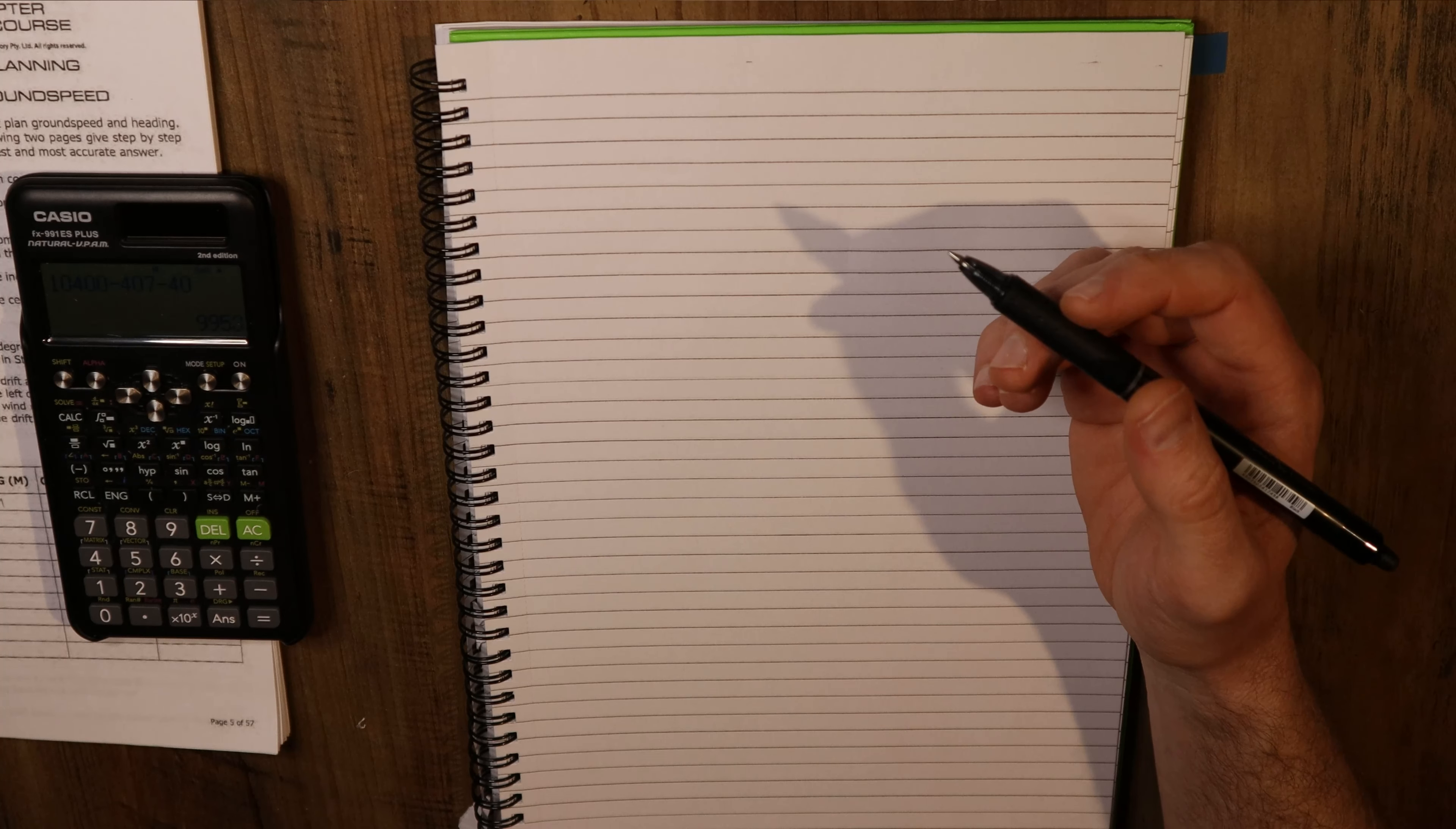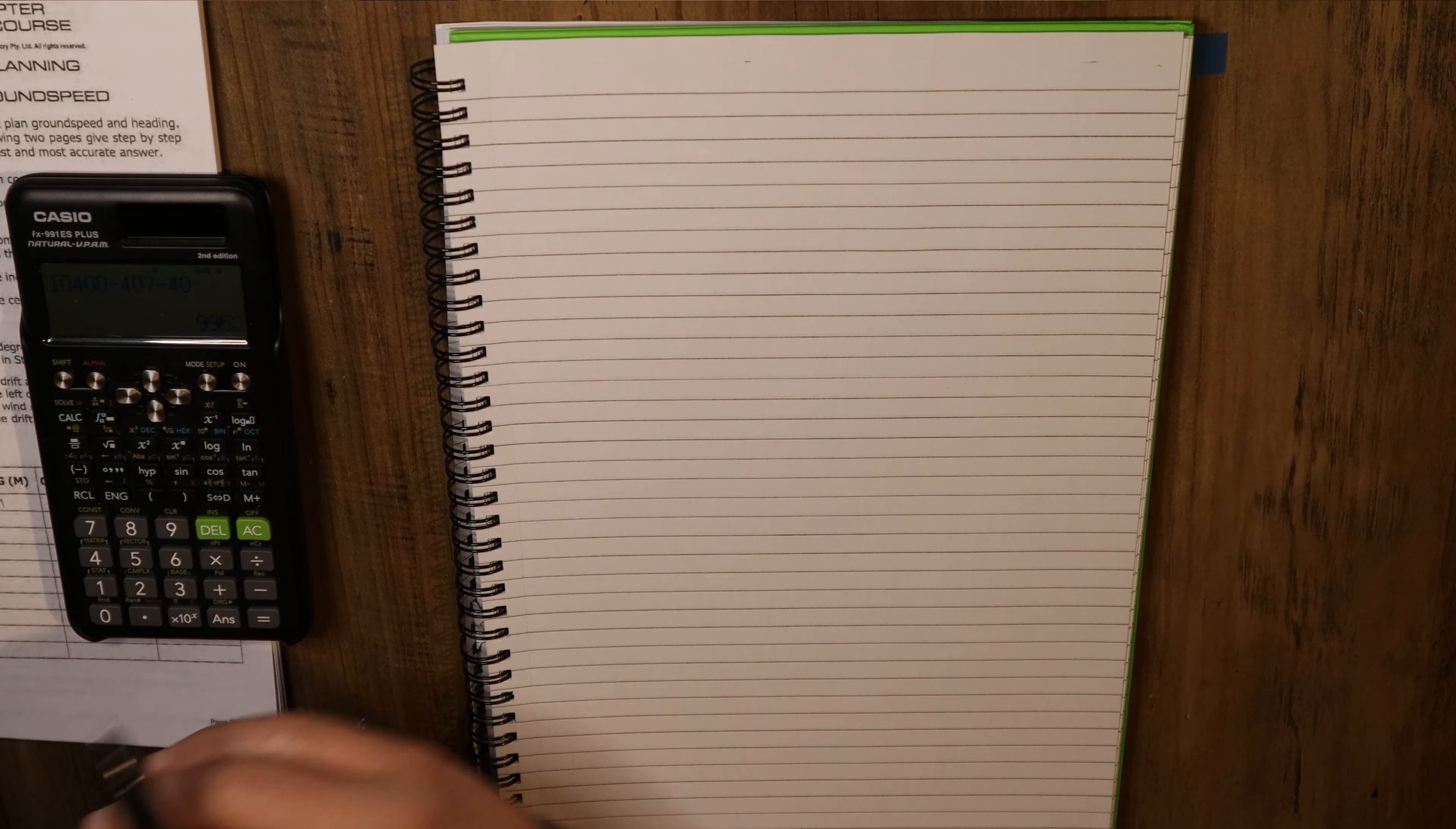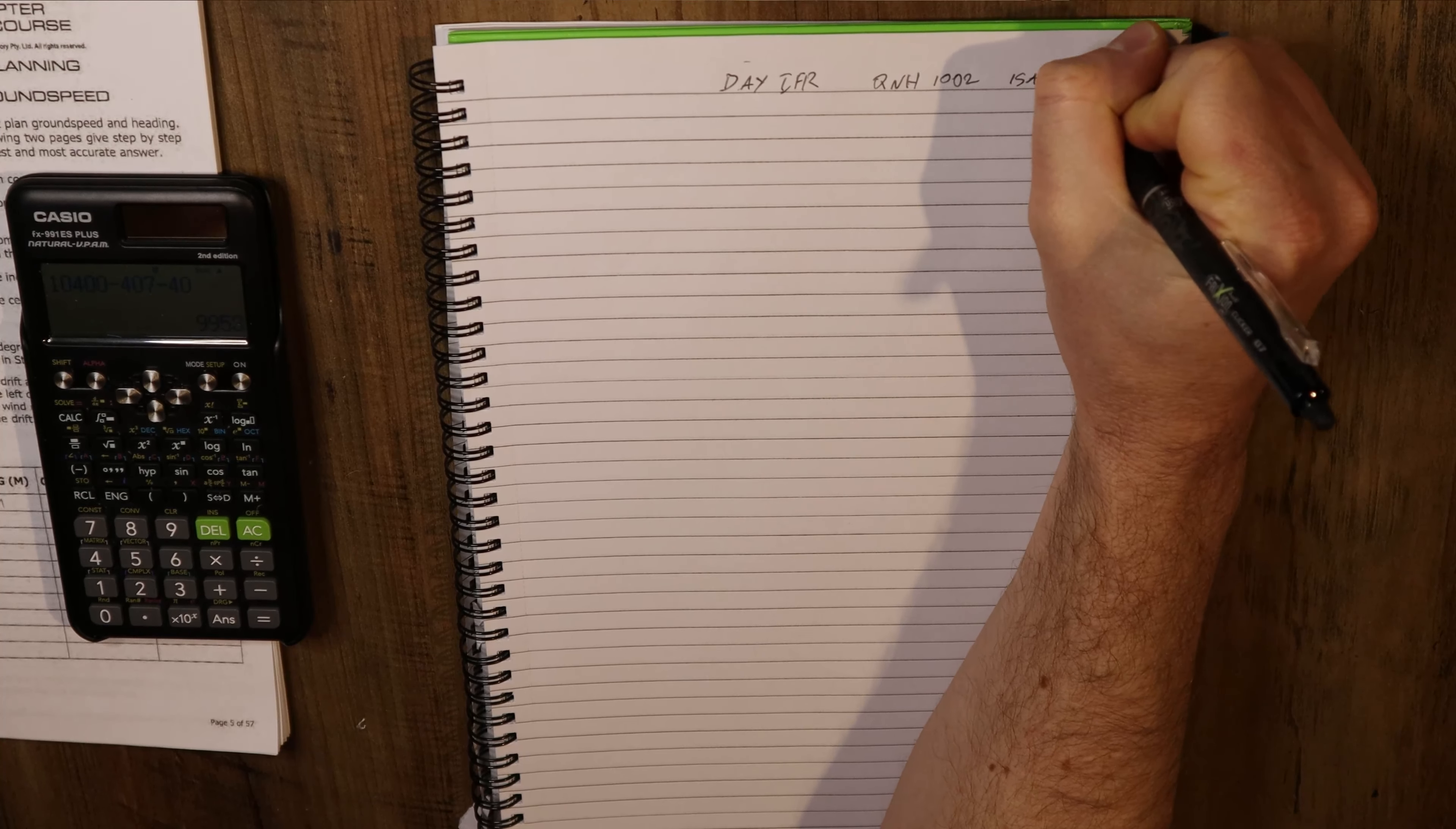QNH 1002 and ISA plus 12. So I like to write out the information just so I have it easily accessible on my piece of paper rather than the information on the screen. So day IFR, QNH 1002, ISA plus 12.